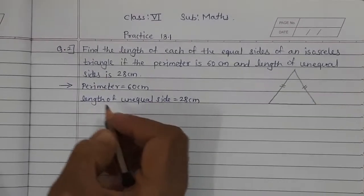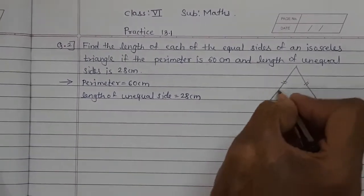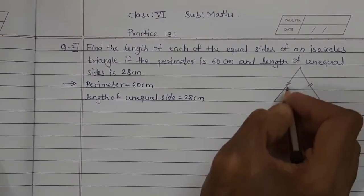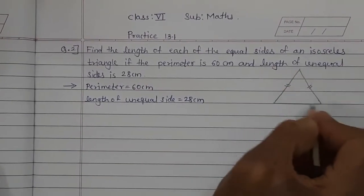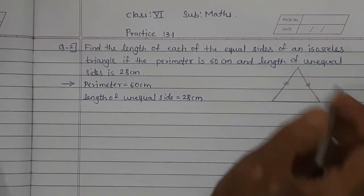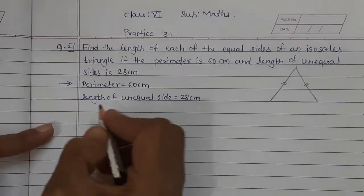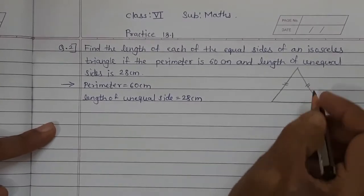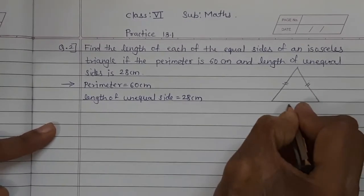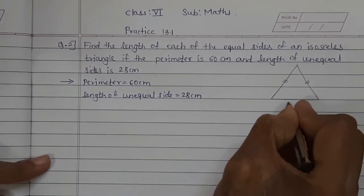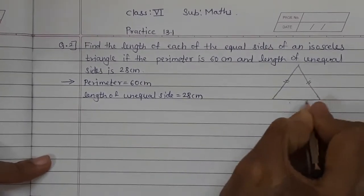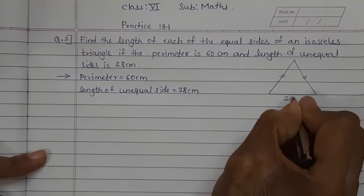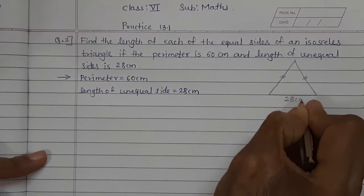So what is given? Perimeter of the isosceles triangle is given, and the length of the unequal side. Now these two sides are equal, so which is the unequal side? This is the unequal side, and its length is given as 28 cm.